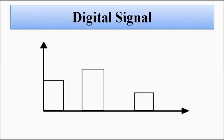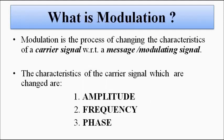Specific transmission techniques are used for analog and digital signals in communication — this is called modulation. Modulation is basically the process of changing the signal characteristics — that is, amplitude, frequency, and phase — of a carrier signal with respect to the original information-containing signal, which is called the message or modulating signal. This message signal alters the characteristics of a high-energy carrier signal.